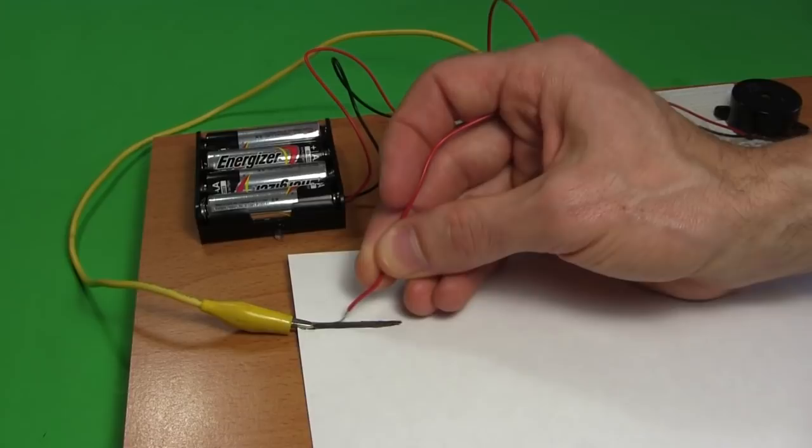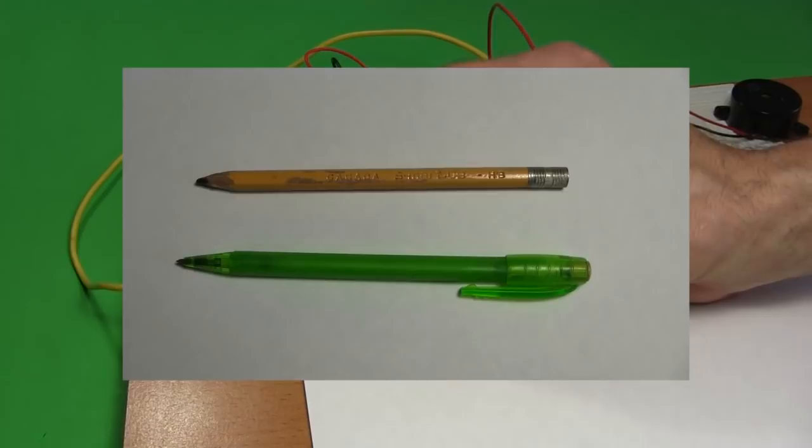If you don't, move the wire around on the pencil mark. If you still don't, then the problem could be with your pencil. This pencil didn't work for me, but this one did, even though they're both HB type pencils.